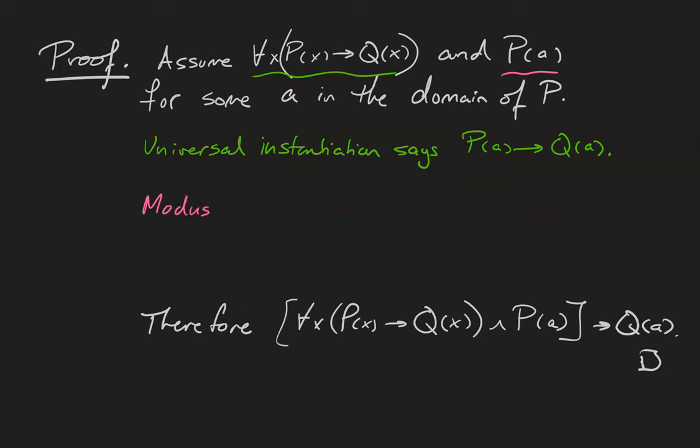Modus ponens, with if P(a) then Q(a), and P(a) gives Q(a). Therefore, if both of these statements are true, then Q(a) must be true as well.